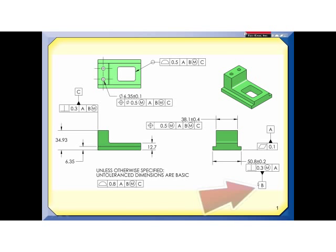My secondary datum feature is this width B. Its size is 50.8 plus or minus .2 so the largest it can be is 51 and at 51 it can be out of perpendicular .3 so it can act like 51.3. In other words, its maximum material boundary with respect to the first datum plane would be 51.3 so if I build a fixture to hold this part, I would have two parallel planes 51.3 millimeters apart.